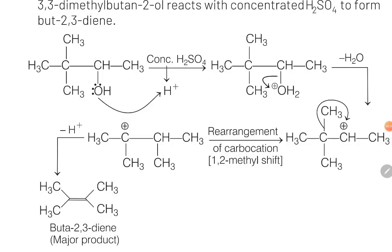In the first step, H⁺ ions from concentrated H₂SO₄ are taken by the OH group of the alcohol, converting it to H₂O⁺, and hence water is released. Once water is released, it results in the formation of a 2° carbocation. A 1,2-methyl shift then takes place so that a more stable 3° carbocation is formed. Once the 3° carbocation is formed, H⁺ ions are lost from the adjacent carbon atom, resulting in the formation of a double bond.